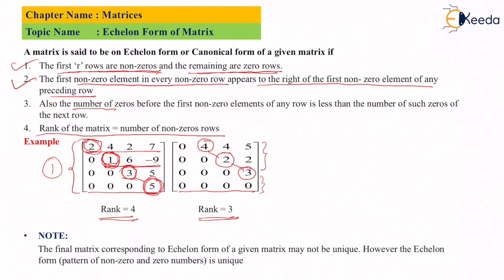The third condition: the number of zeros before the first non-zero element increases with each row. For example, the first non-zero element in one row is preceded by 1 zero, then the next row has 2 zeros, and the next has 3 zeros. This condition is satisfied, and this is what defines the echelon or canonical form.